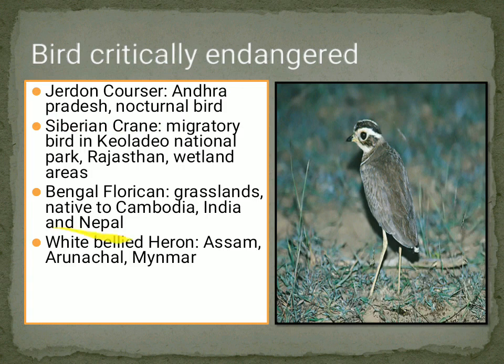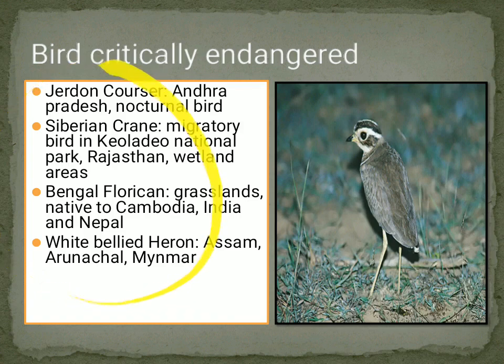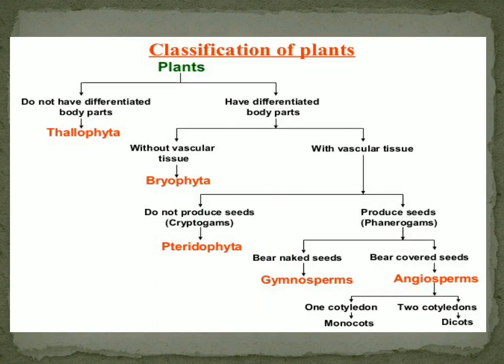Bengal Florican is found in Cambodia, India, and Nepal. White Bellied Heron is found in Assam, Arunachal Pradesh, and Myanmar in dry deciduous forests of South Madhya Pradesh, Western Maharashtra, and North Central Maharashtra. Critically endangered birds include White Bellied Heron, Bengal Florican, Siberian Crane, and Jordan Cussar.